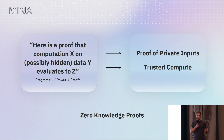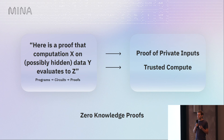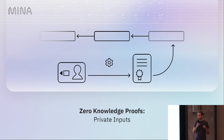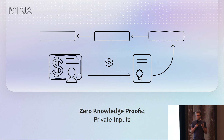I have a slide on zero knowledge proofs — most folks here probably know what they are. Here's how I often think about them: they are proofs about computation that give you two key properties. One is proofs about private inputs, and the other is trusted compute — you can have computation and verify it much more cheaply than rerunning the actual execution of the program itself. This has a lot of use cases, things like proofs of identity: you can take an identity, make a proof about it, and the proof can create selective disclosure over facts about that identity.